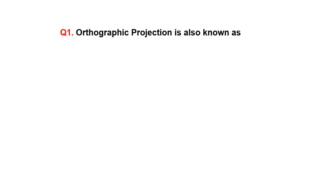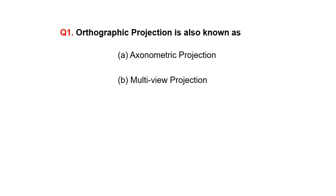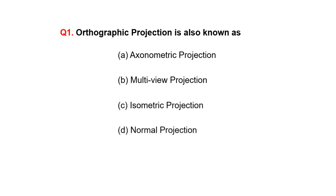Orthographic projection is also known as: A. Axonometric projection, B. Multi-view projection, C. Isometric projection, or D. Normal projection.